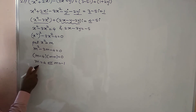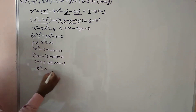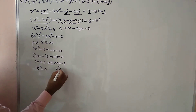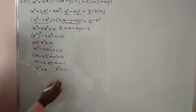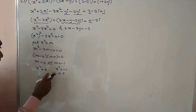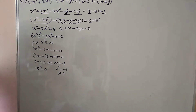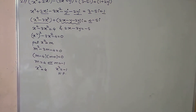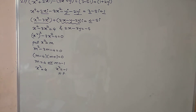Solving m² - 3m - 4 = 0, the factors give m = 4 or m = -1. Since m = x², we have x² = 4 or x² = -1. Now x² = -1 is not possible because x must be a real value, so x² = -1 has no real solution.